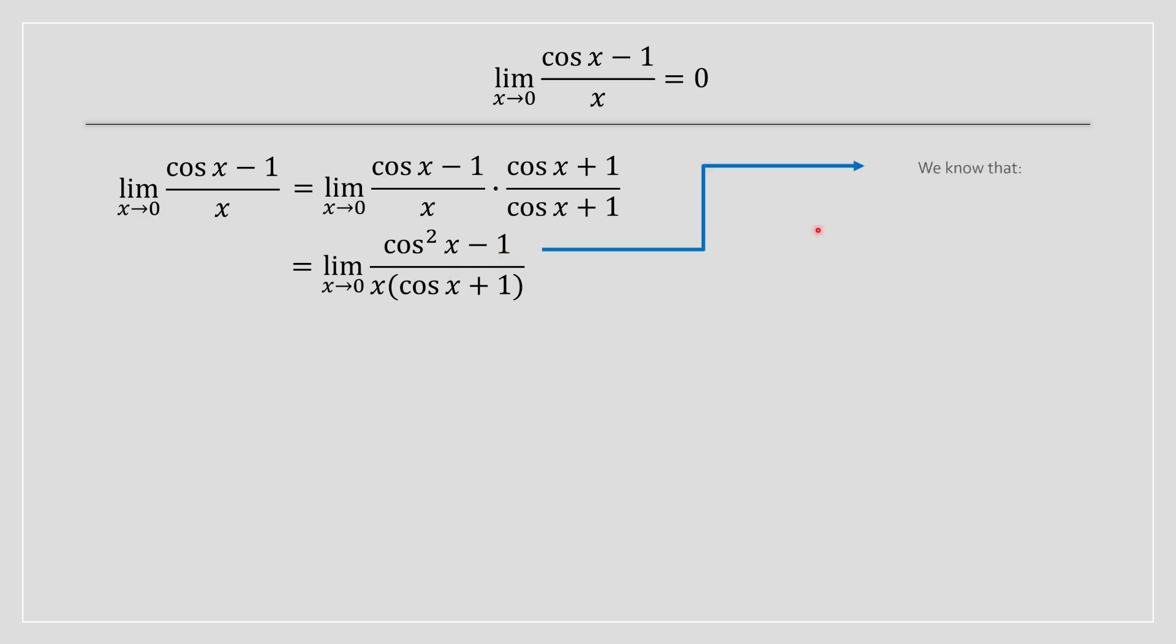We know that when we apply this trig identity, sin²x + cos²x = 1, we can rearrange it to solve for cos²x - 1, and we know that's going to be equal to negative sin²x. We are then going to take this negative sin²x and replace it in the numerator of this equation.